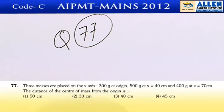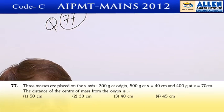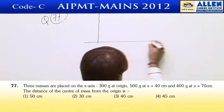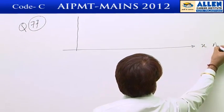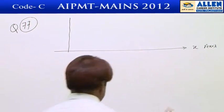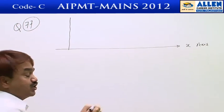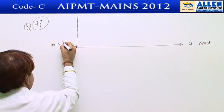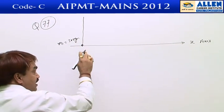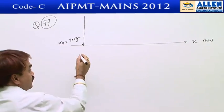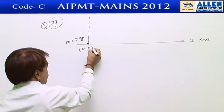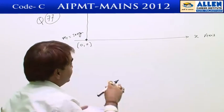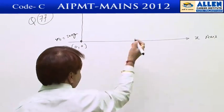Question number 77. According to the question, 3 masses are placed on the x-axis. The first particle has mass m1 equals 300 grams and is placed at the origin, with coordinates (0, 0). The second particle has mass m2 equals 500 grams and is placed 40 centimeters from the origin along the x-axis.